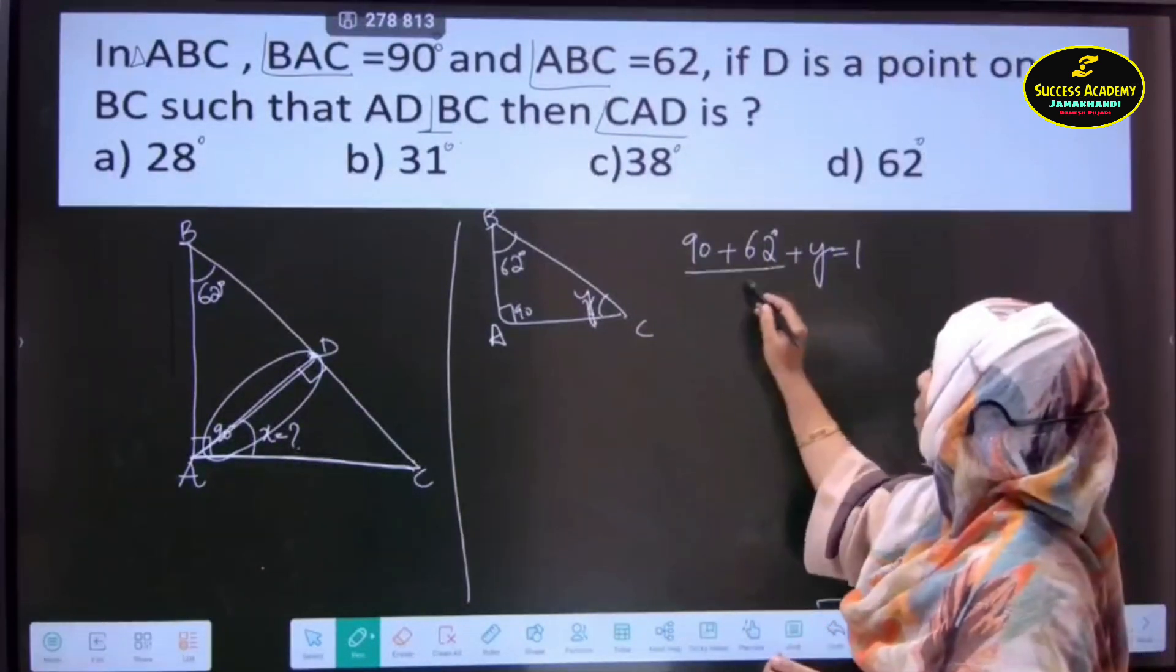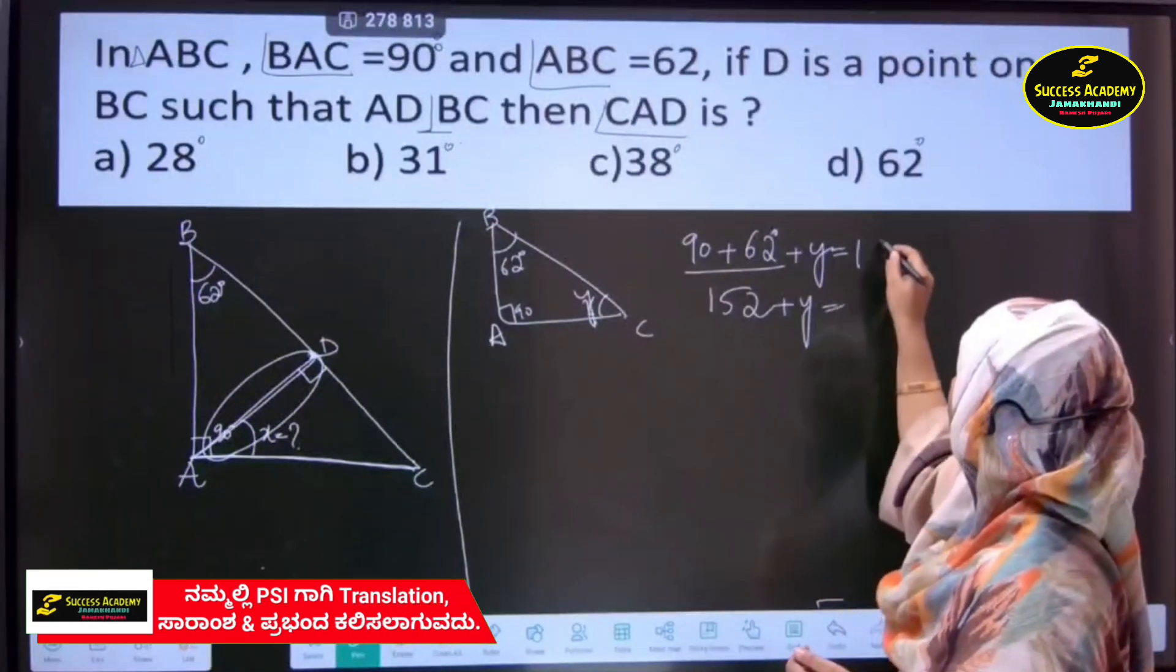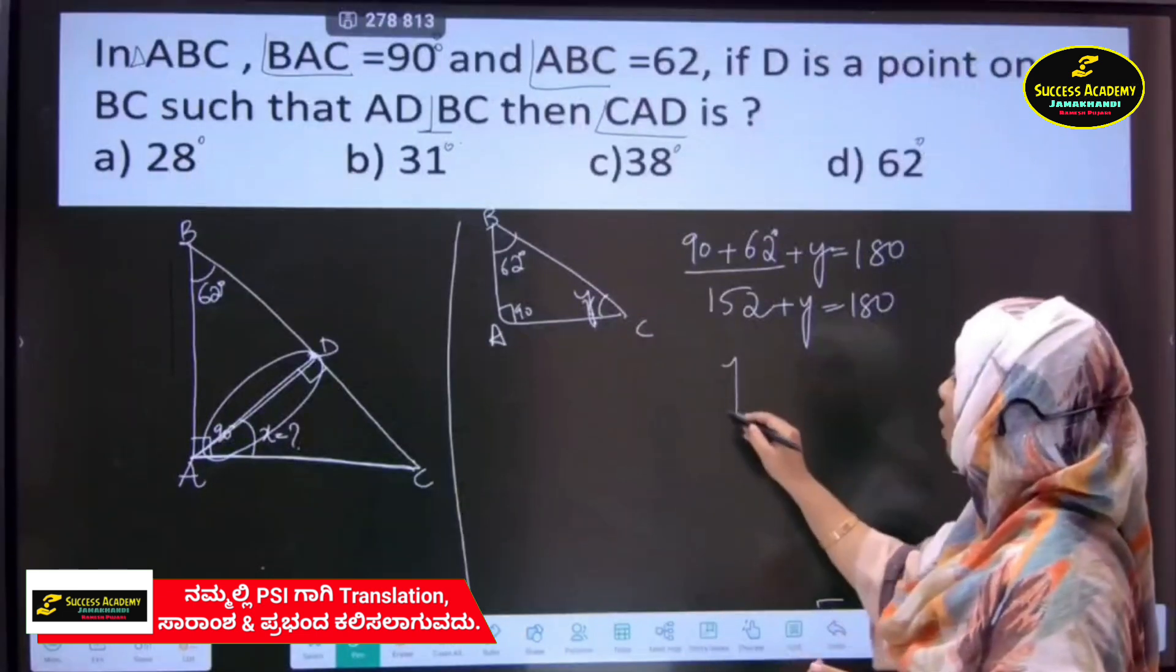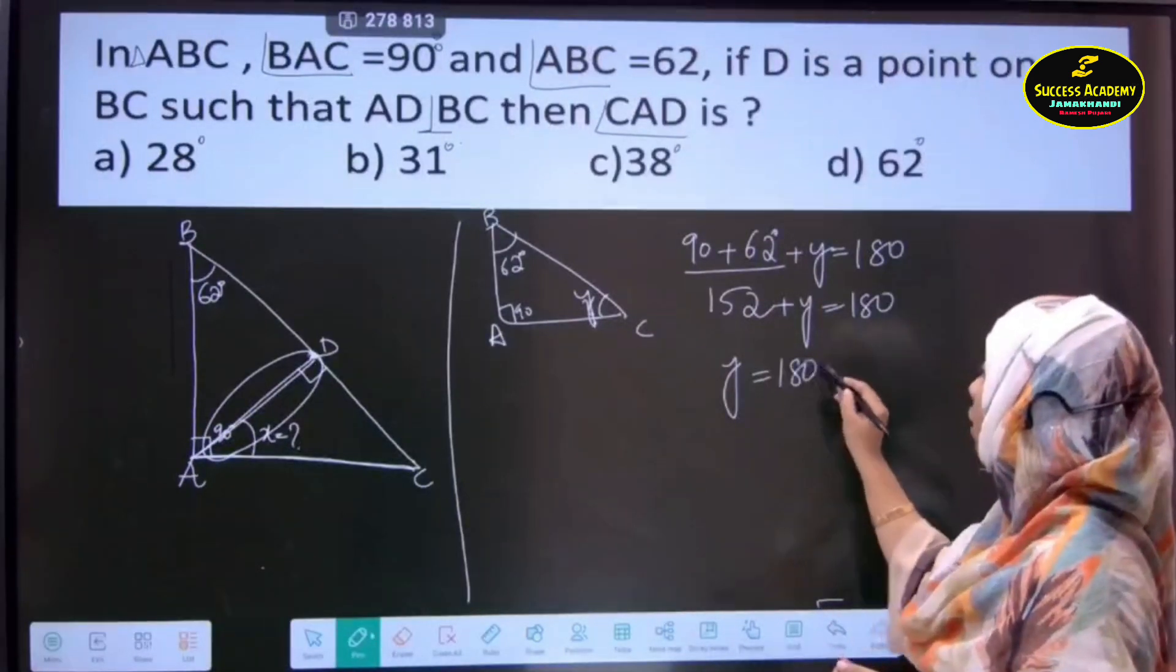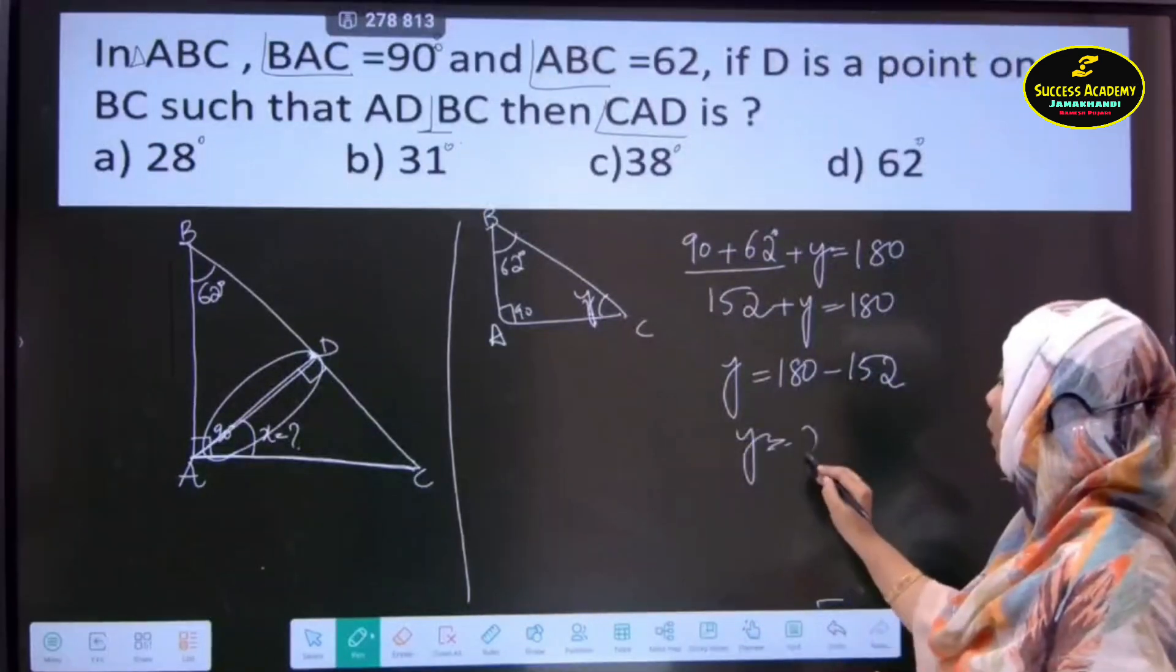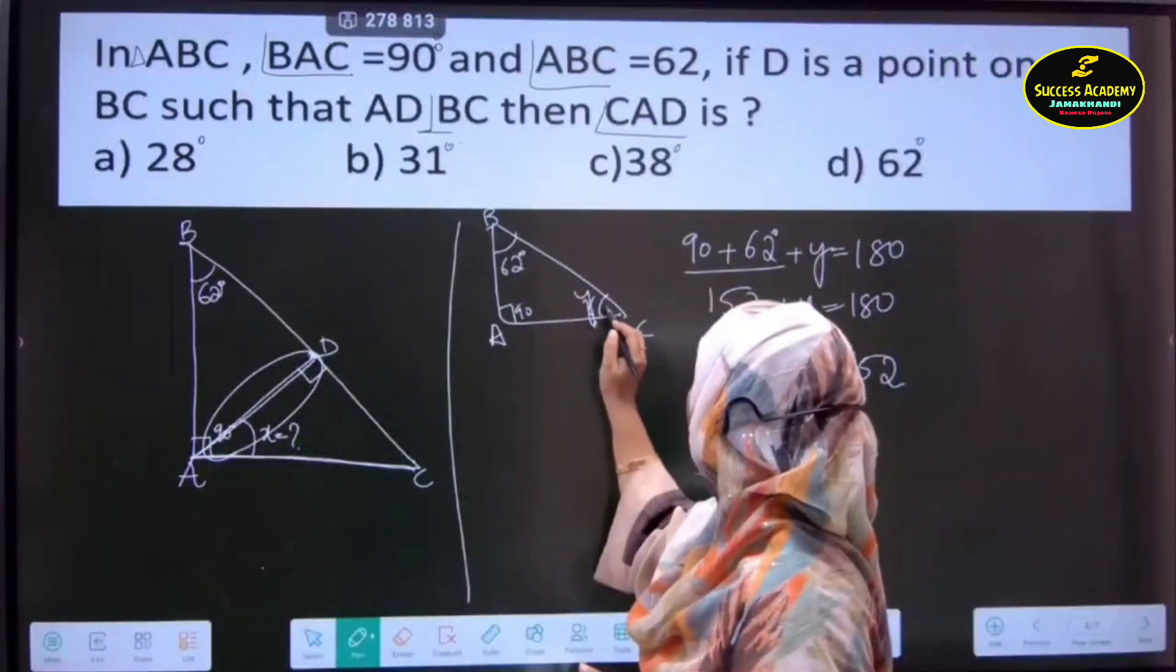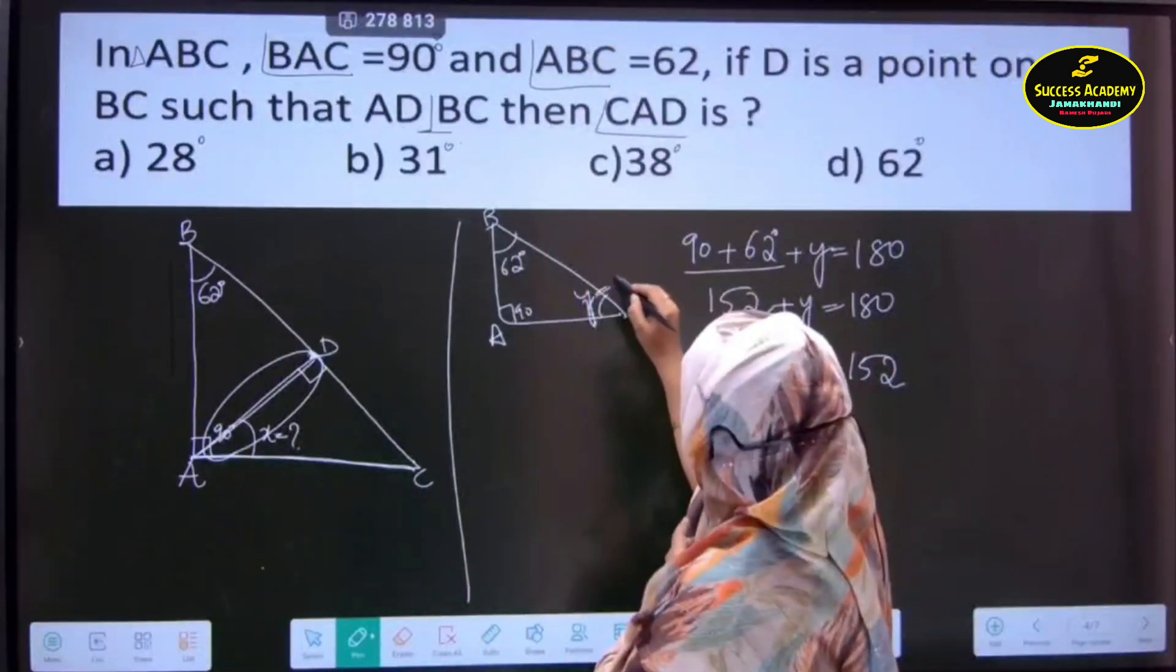So, therefore, 90 plus 62? 152 plus Y is equals to how much? 180. Hence, Y is equal to 180 minus 152 is how much? Y is equals to 28 degrees. So, we got the result as Y is how much? 28 degrees.